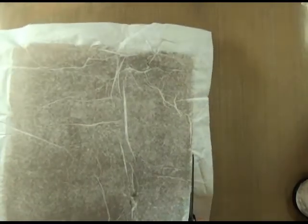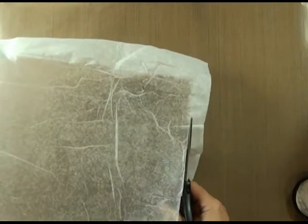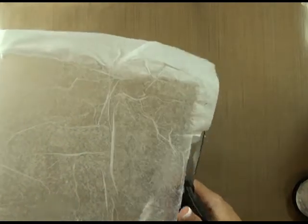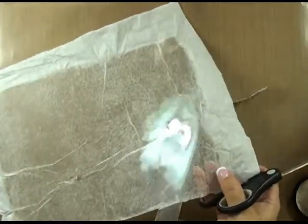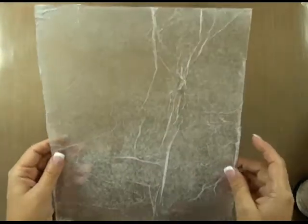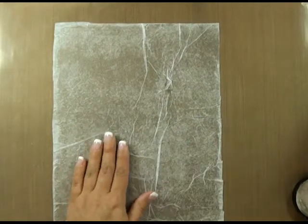So now that it's dry, I'm just going to trim the edges, and I'm just using a regular pair of scissors, and I'm using the edge of my transparency as a guide. So we're now done creating the glassine piece, and we're now ready to move on to the next step.